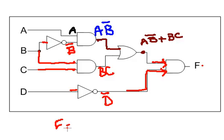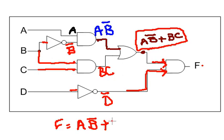So F is equal to, this whole expression right here, which is A NOT B or BC, and, so big parentheses here, NOT D. So this expression basically represents this big circuit. Okay, so this is how you look at a circuit and derive its Boolean expression.